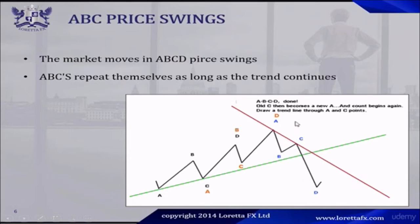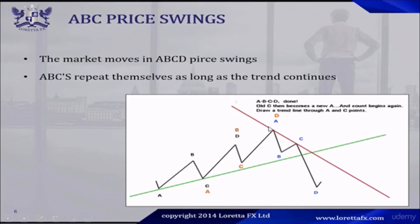If the market has not made a higher high, we cannot continue this A, B, C. We can say A, B, C only as long as the market is making a higher high. The opposite is true: if the market is making lower lows, we can always say A, B, C and continue saying A, B, C as long as the market is making lower lows. This is the way the market moves — A, B, C. All C's then become a new A and the count begins again.